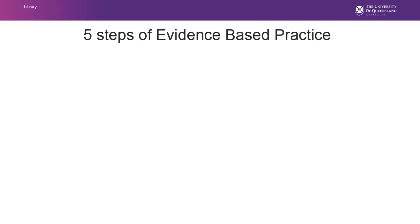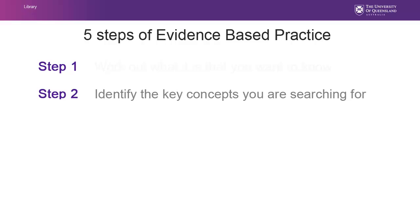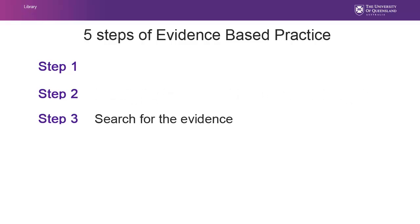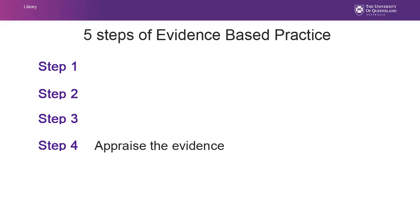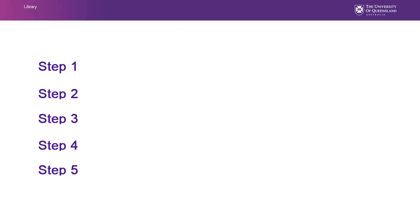The five steps of EBP are: Step 1, work out what it is you want to know; Step 2, identify the key concepts you're searching for; Step 3, search for the evidence; Step 4, appraise the evidence; Step 5, putting evidence into practice. In this video, we'll look at the first three steps.